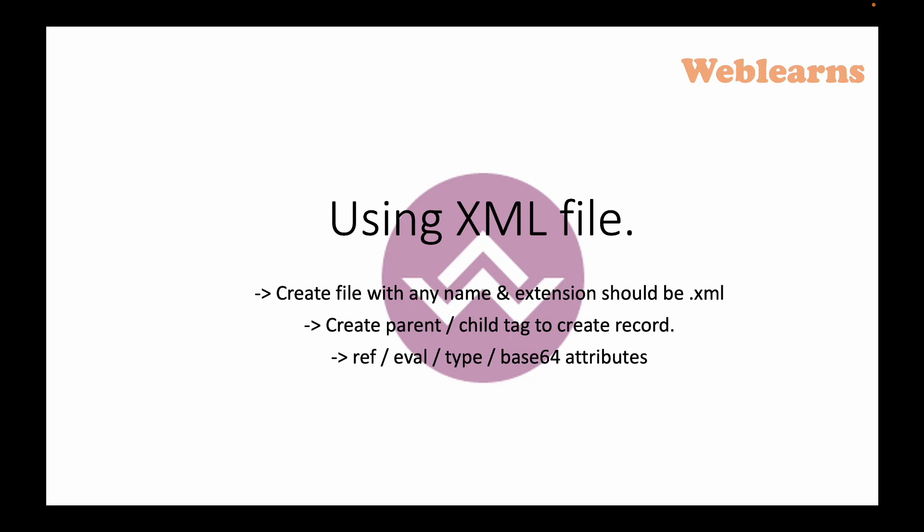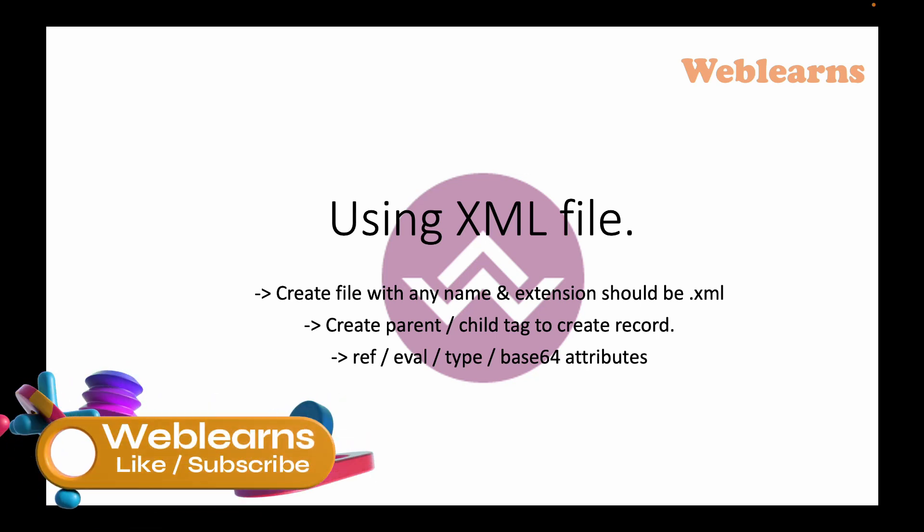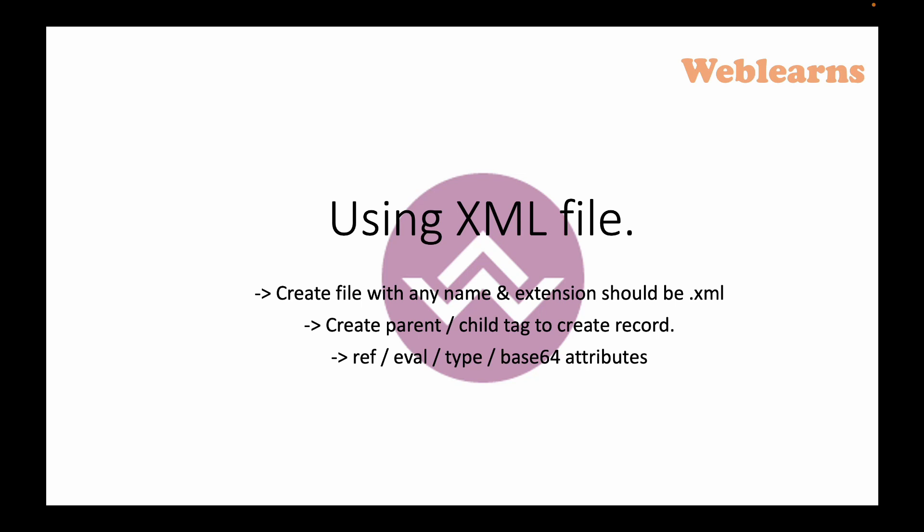I have mentioned some very useful attributes: ref, eval, type, and base64. What they do we will see in our upcoming session, but using those attributes we can do a lot of things. The basic attributes I didn't mention here — such as id, model, write, and name — are the basic ones you already know, since we use them on a regular basis.